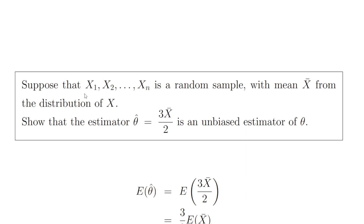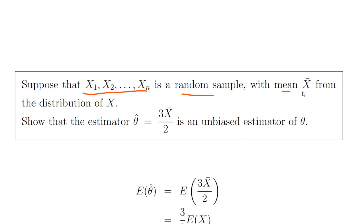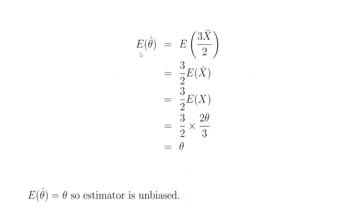For the second part, suppose we have a random sample of values from x with a mean x bar. Show that the estimator theta hat equals 3 times x bar divided by 2 is an unbiased estimator of theta. The expected value of theta hat equals the expected value of 3x bar divided by 2. Taking out the constant, that is 3 over 2 times the expected value of x bar. By definition, the expected value of x bar is the expected value of x, which is 2 theta divided by 3. So 3 over 2 times 2 theta over 3 equals theta. Therefore, the expected value of theta hat is theta, which means this is an unbiased estimator of theta.